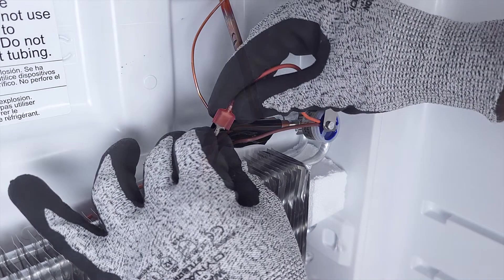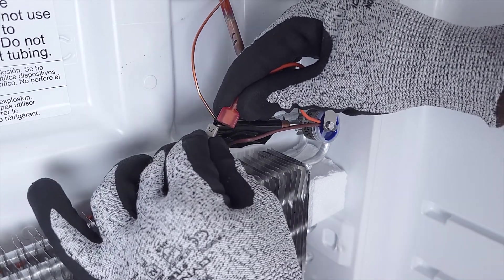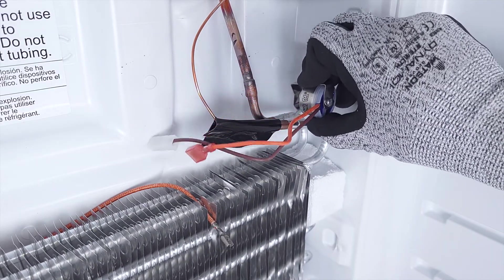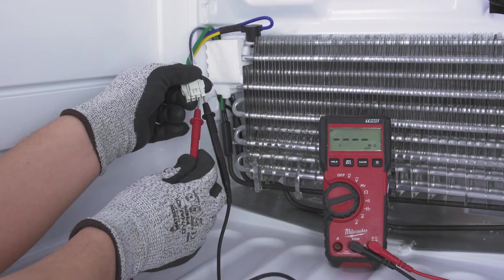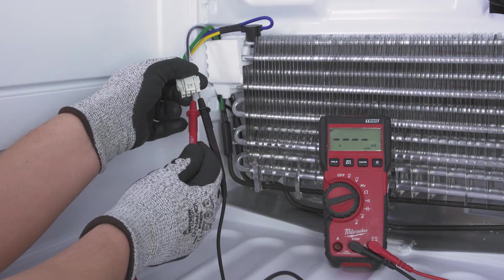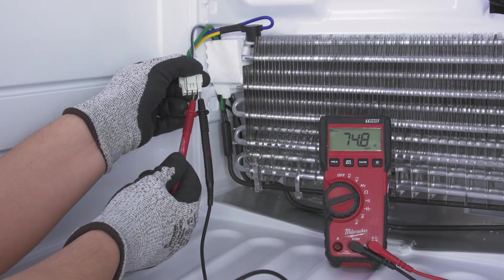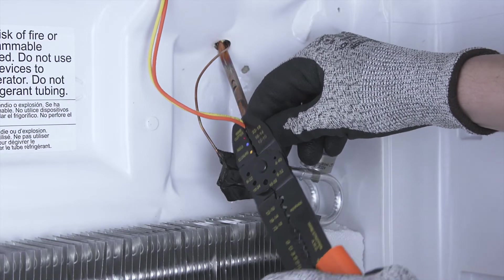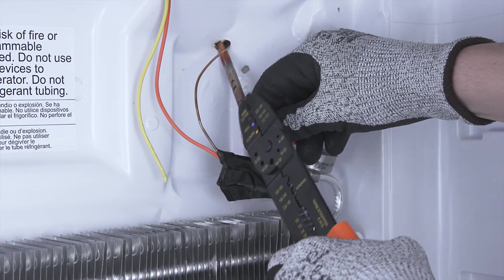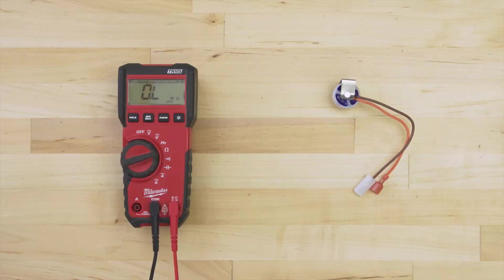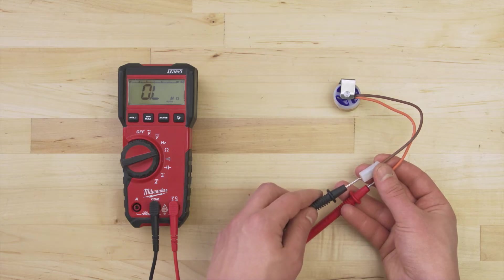First, remove and isolate the thermostat. Some thermostats will have wire connectors. In other models, the thermostat will be built into the defrost heater and can be tested together. In other cases, you might be forced to cut the wires to remove the thermostat. Set your multimeter to the ohms or resistance setting. Now touch the probes to each terminal.